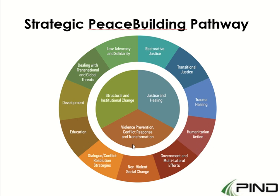Following the colors in the diagram, you can see what falls under each category. Under structural and institutional change, development is one approach — places that are least developed tend to have the most conflict, so seeking development is one strategy for long-term, generational structural change. Development in a slum area may take many years but can begin to cause structural change and slightly break down the conflict and violence in that region. Another area is dealing with transnational and global threats.